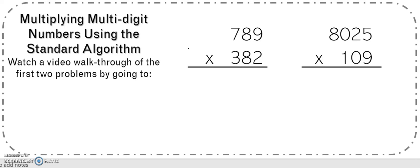Welcome to multiplying multi-digit numbers using the standard algorithm. Let's do a quick refresher just so you know what we're doing. So I'm looking at the first problem here and I have 789 times 382.